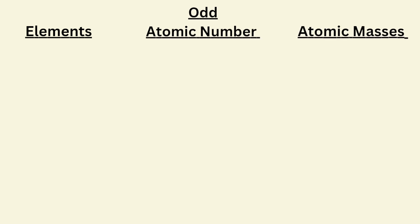Here are some elements, their atomic number and their atomic masses. Atomic number of lithium is 3 and atomic mass is 7.